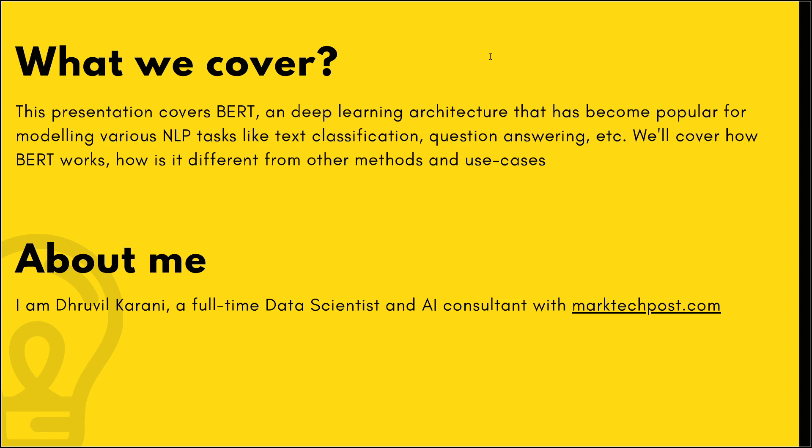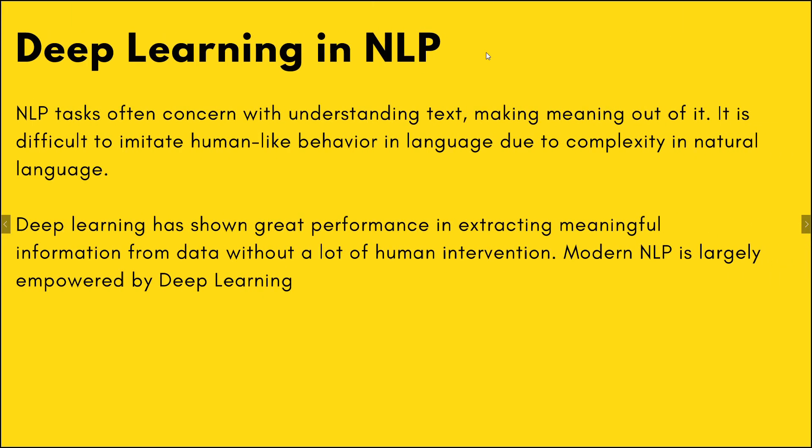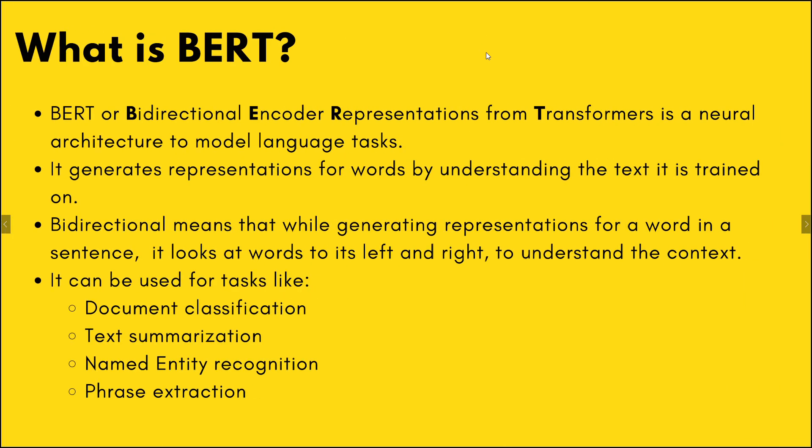Deep learning has been extremely popular in NLP in recent times, especially with the advancements in architectures like LSTM and RNNs. More recently, BERT, a different type of neural network, has dominated all the NLP tasks and is really popular for any downstream tasks like sentence classification or text summarization.